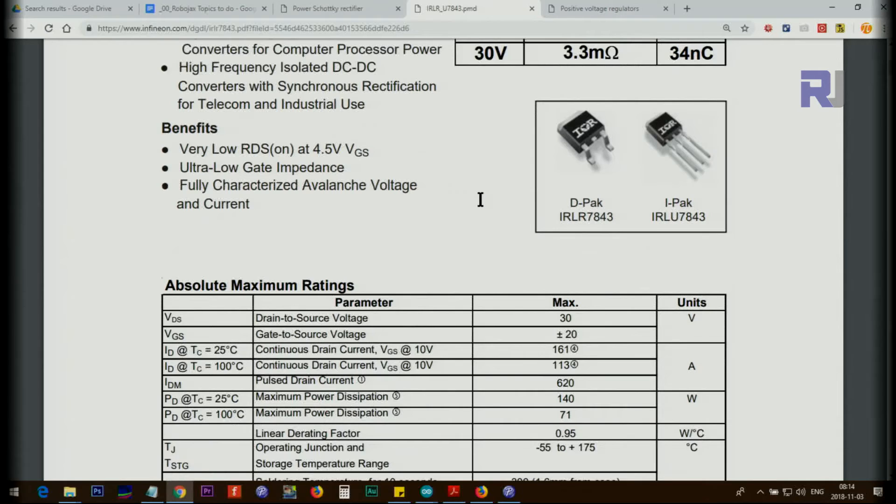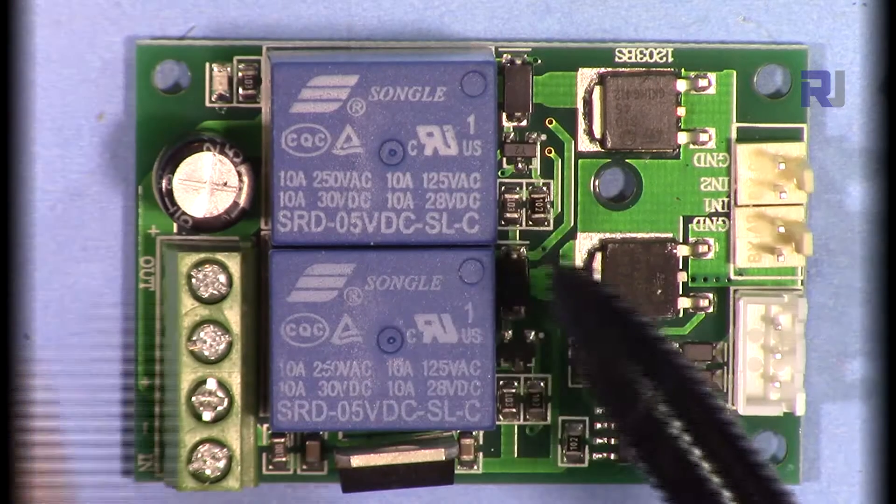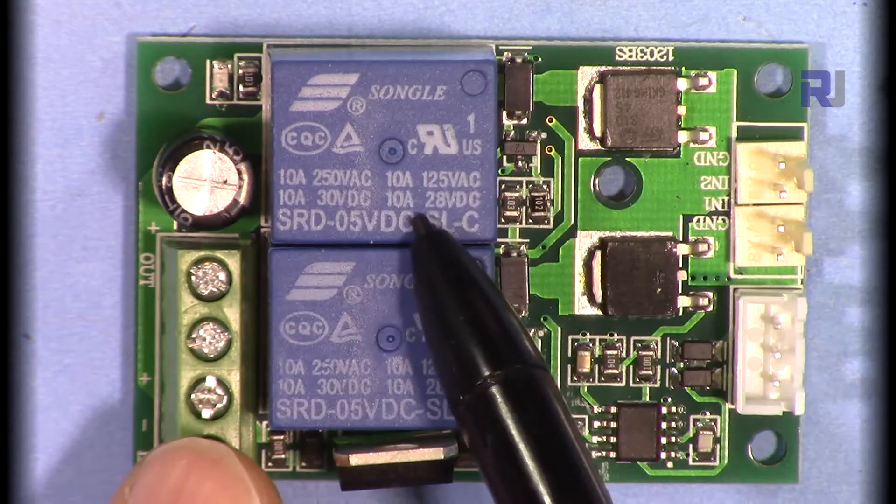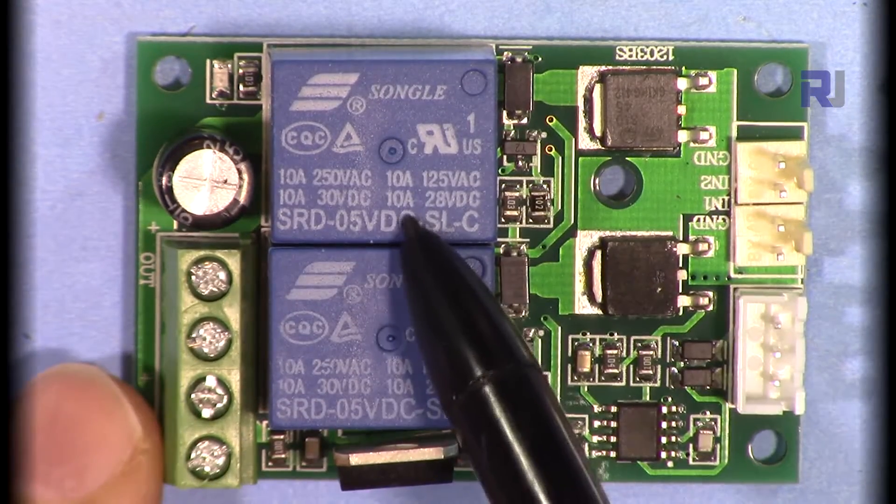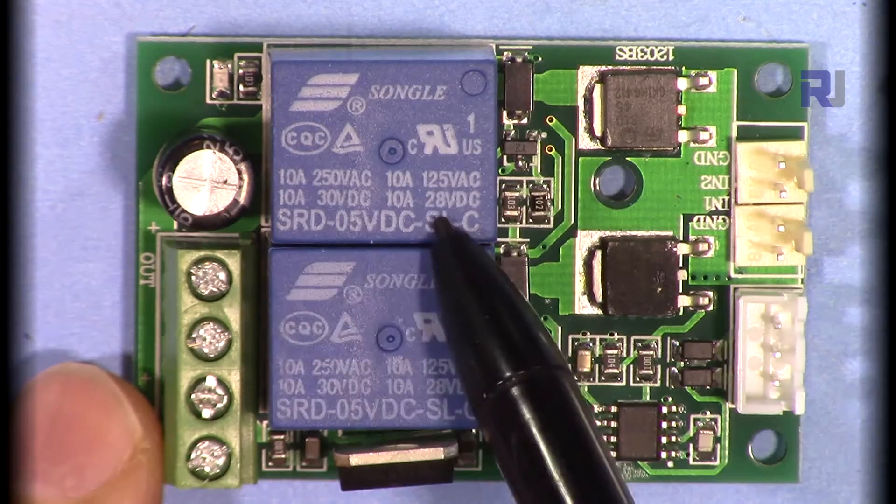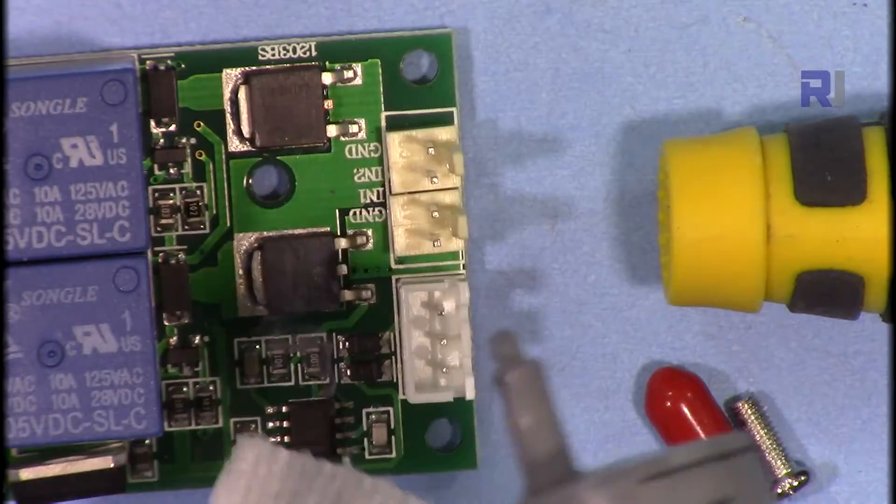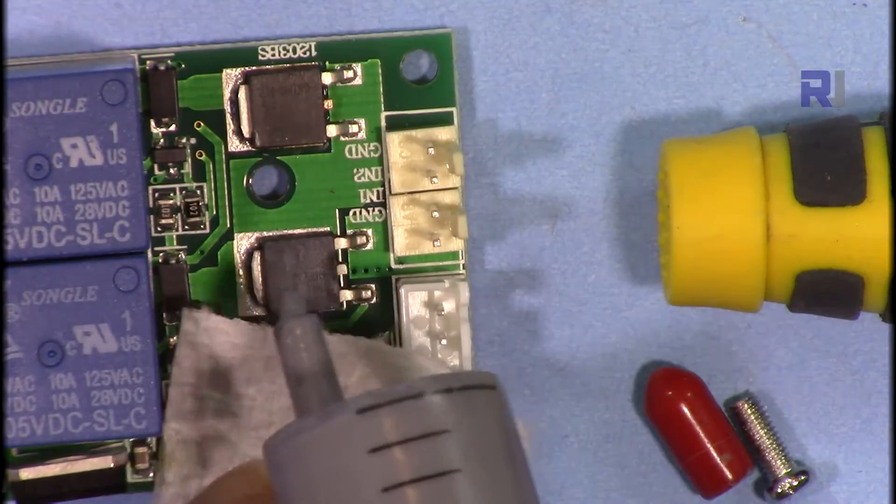This has huge amount of current. At 10 volts it can handle up to 161 amps, but at 25 degrees the limiting factor for your motor is this, so you can connect up to 10 ampere motor. Be careful, 30 volts, 10 ampere. This can handle it very well. Let's now apply some heat transfer compound here.